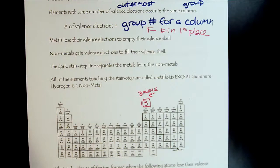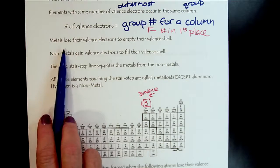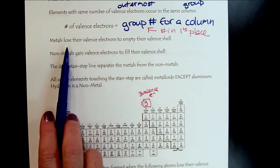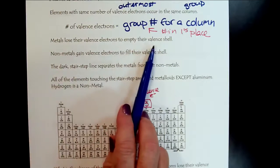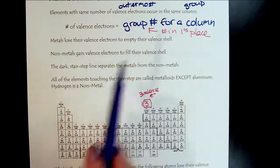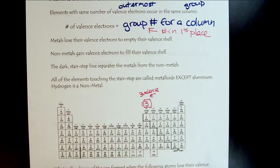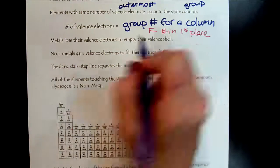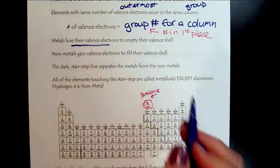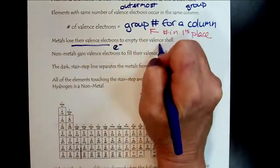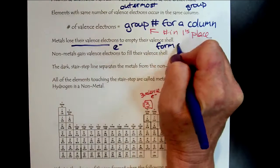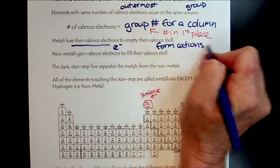What we're going to learn about in more detail today is that valence electrons on metals are lost to empty their valence shell to get back to having the octet. When we lose electrons, remember electrons are negative, so if we lose electrons we're forming cations which are positive.